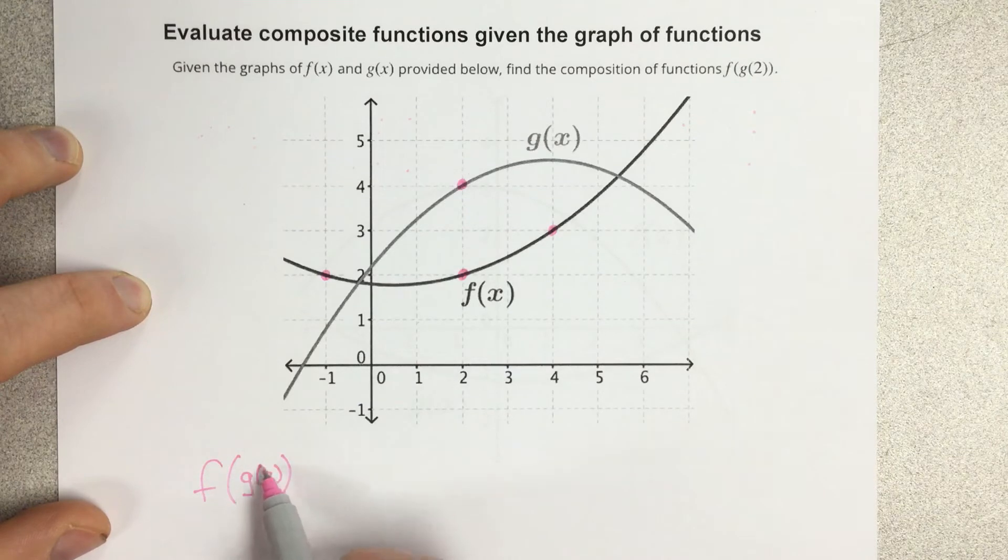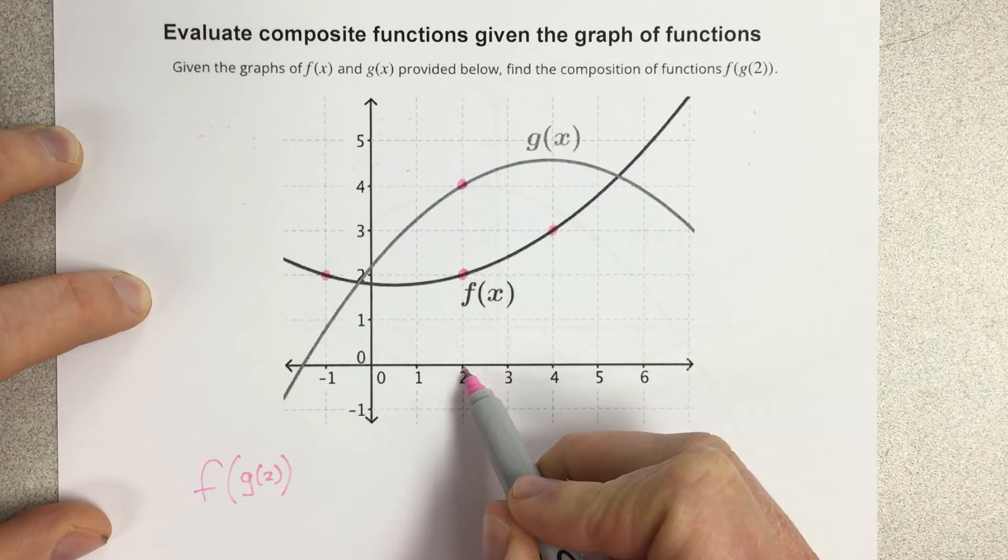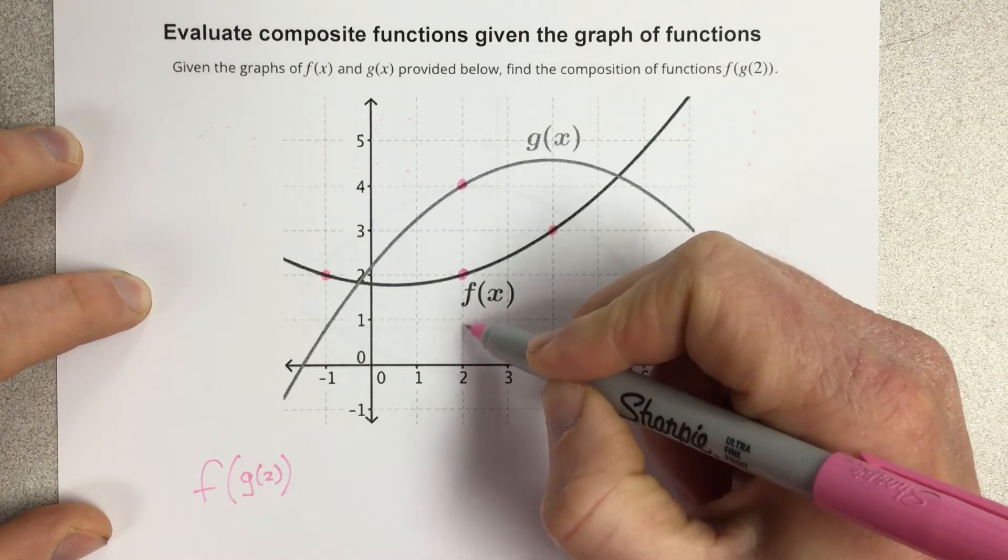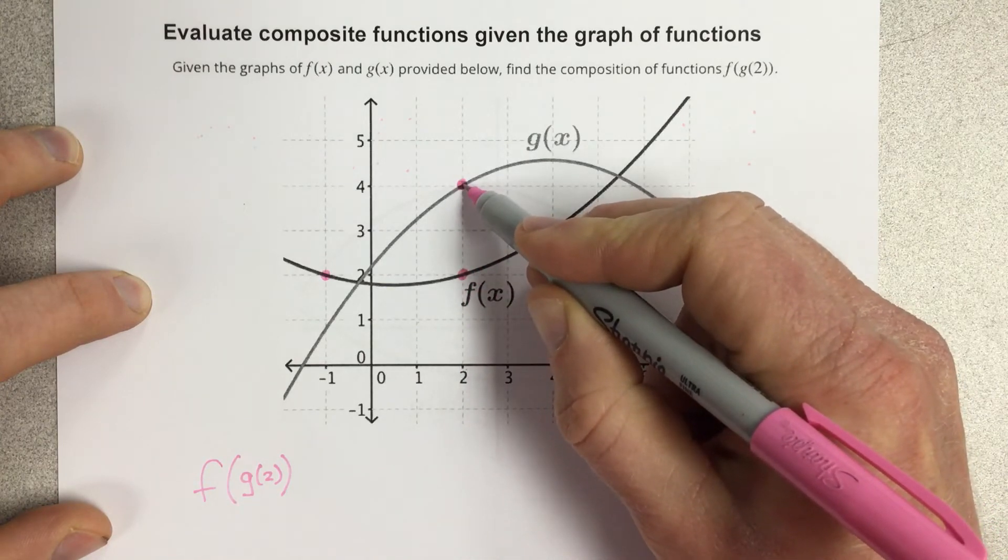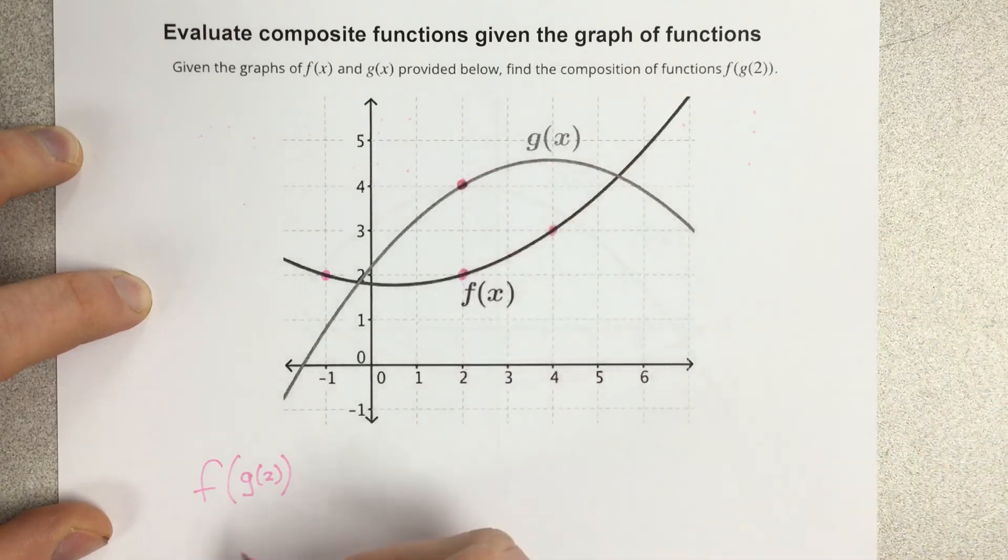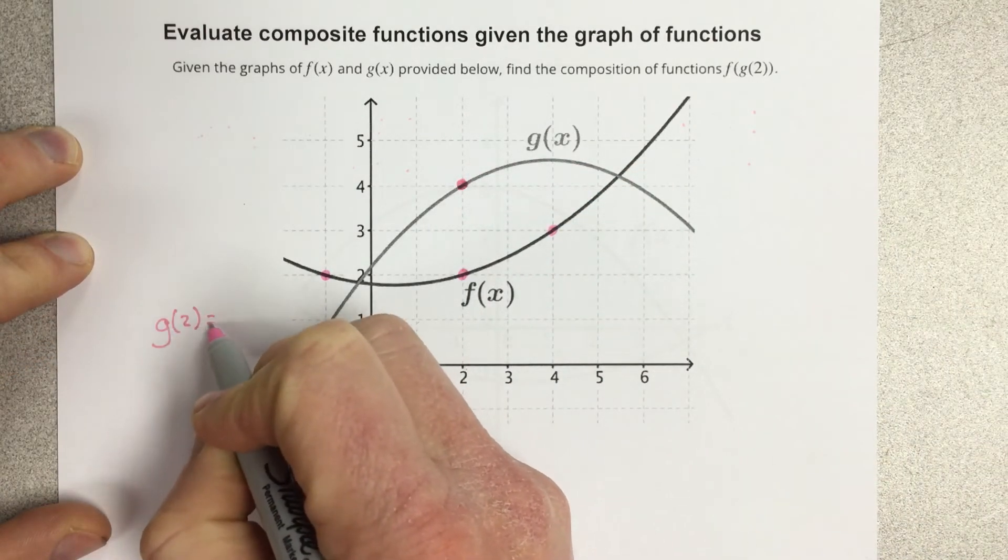The first thing we want to do is look at what g of 2 is. So we go to the x value of 2, and then we move up to where we hit the g function. I hit the g function at an output of 4. So that means that g of 2, I'm going to write that out here to the side, g of 2 is equal to 4.